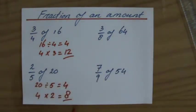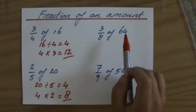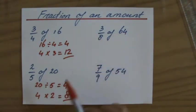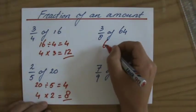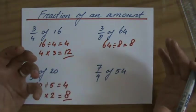3/8 of 64. So I have 64 sweets, for instance. And I give away 3/8 of it. So first I divide it into 8 equal parts. So I divide 64 into 8 equal parts. So each part contains 8 sweets.